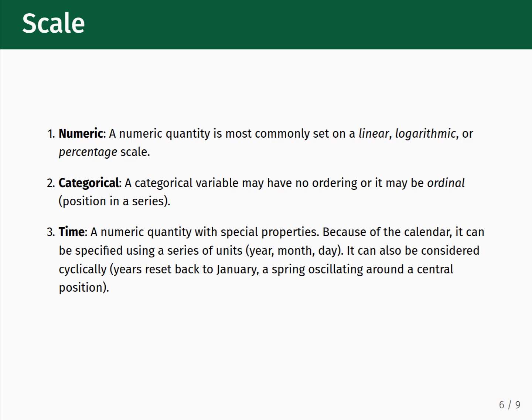Finally, there is the timescale, which is a numerical quantity with special properties. Because of the calendar, it can be specified using a series of units — year, month, and day. It can also be considered cyclically. For example, years reset back to January, or a spring oscillating around a central position.